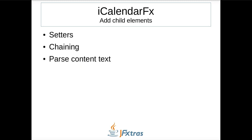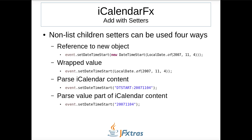There are three ways to add child elements to parents. First is by using setters. Second is by chaining, which is another type of setter that returns itself. Third is by parsing iCalendar content text. I'll talk about adding children with setters first. These examples are specific for non-list children, meaning the element is only permitted once in the parent object, such as the DateTimeStart property in a vEvent.